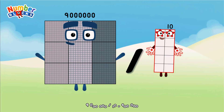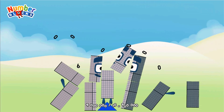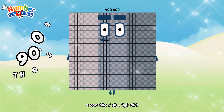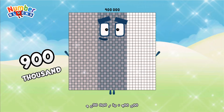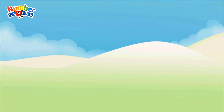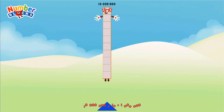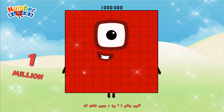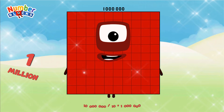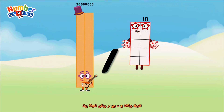9,000,000 divided by 10 equals 900,000. 10,000,000 divided by 10 equals 1,000,000. 20,000,000 divided by 10.